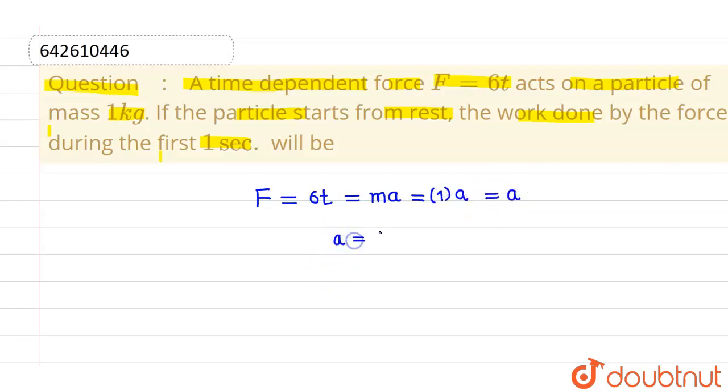We also know that acceleration can be written as dv over dt, and this is given as 6t. Now let us find out velocity. So dv will be equals to 6t into dt.